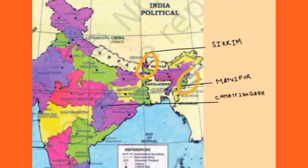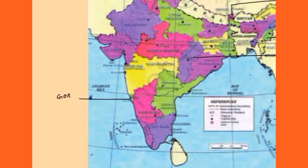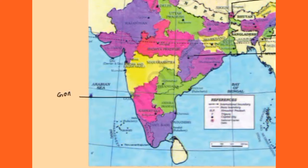This is Manipur. Then, between Madhya Pradesh and Odisha, marked in violet colour, this is Chhattisgarh. Next is Goa — here is a small green portion. Goa is the smallest state in India and it is marked here. So you can mark, locate and label these states.